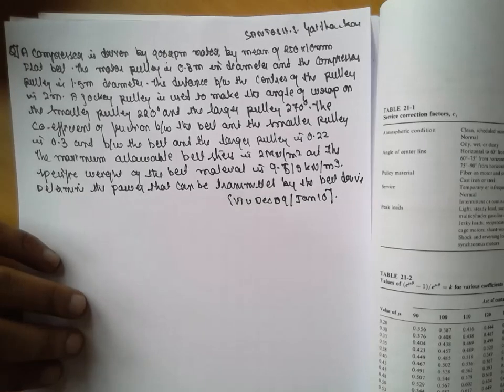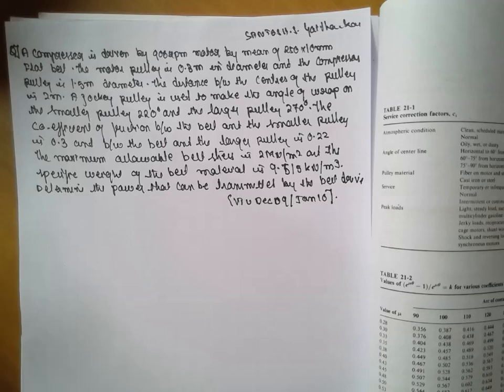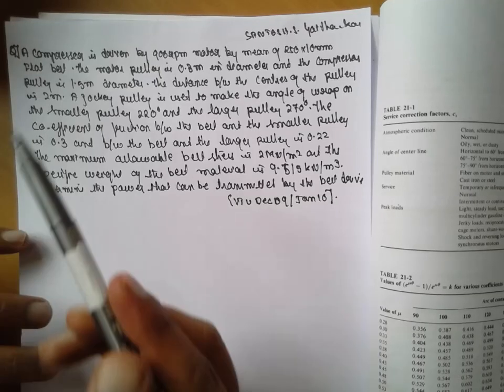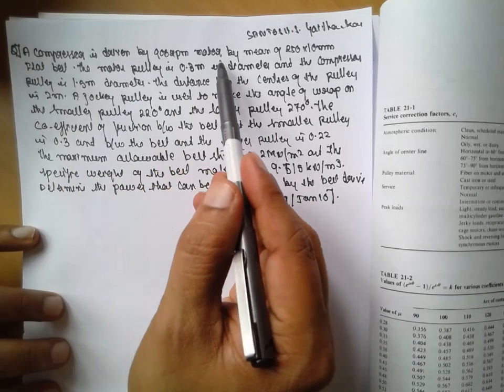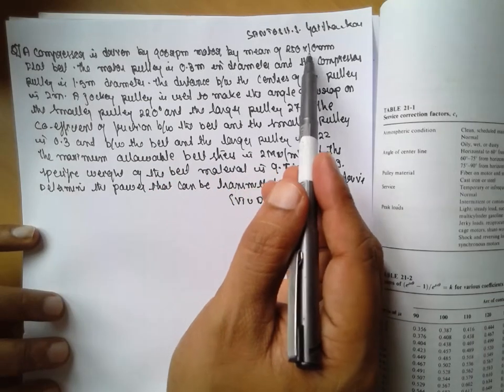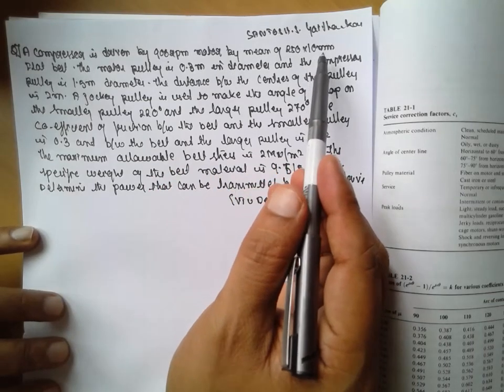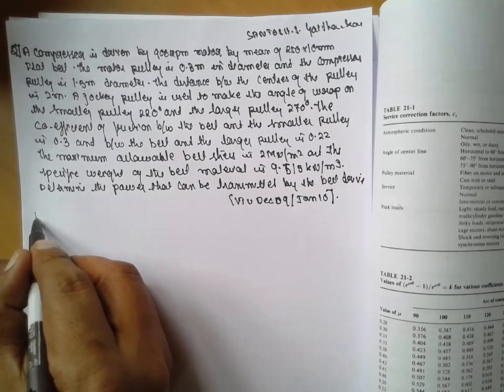I am Santosh Gayadankar. Today's concept is about flat belt drives. A compressor is driven by a 900 rpm motor by means of 250 into 10 mm flat belt. The argument data is given here.